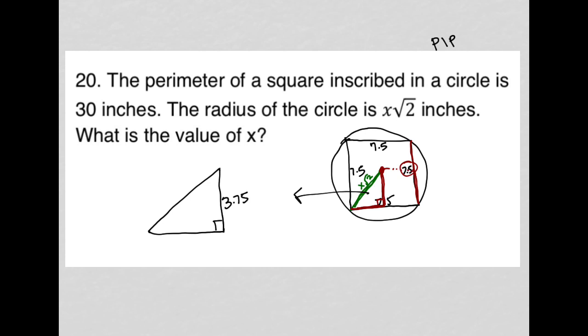And the base of this right triangle is also half of 7.5, so it's also 3.75. And then I have this x root 2 here.